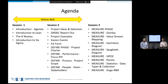So a quick recap: Yellow Belt session one was an introduction to lean, where we talked about the three main elements — the eight wastes, eliminating variation, and eliminating overburdening. Then we talked about introduction to Six Sigma, which is all about solving problems using a data-driven approach. Those are the key elements we took away from the first day of training.